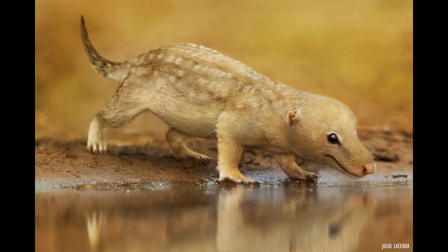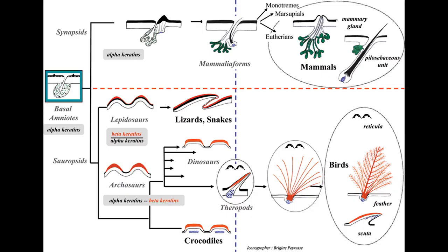Though cynodonts definitely had hair, the extent to which hair covered other therapsids is debated. Maybe they had just whiskers or sparse tufts of fur, but without better fossils we will never know. Molecular phylogenies show that hair originated from the repeated duplication and diversification of keratin paralogs, and that these have further diversified within mammals.